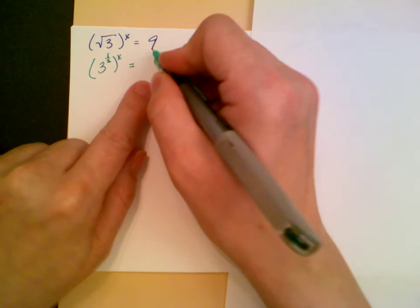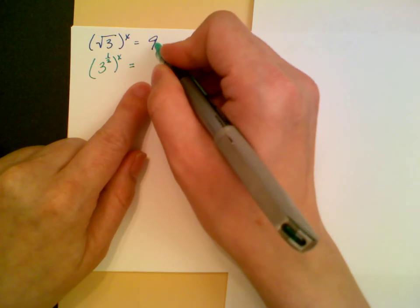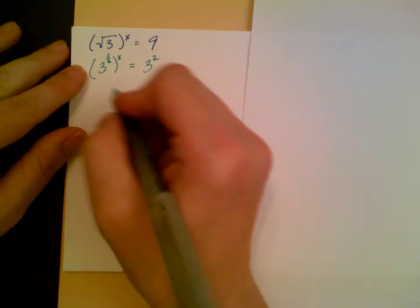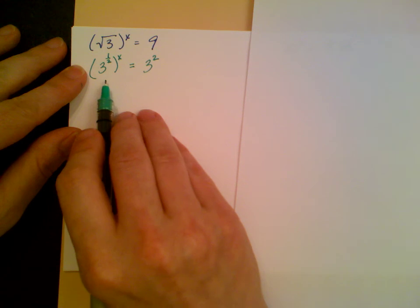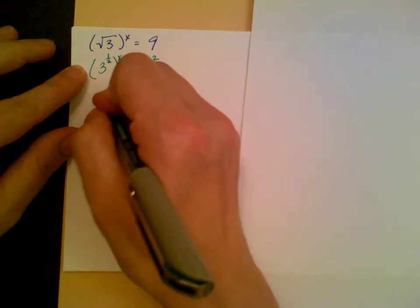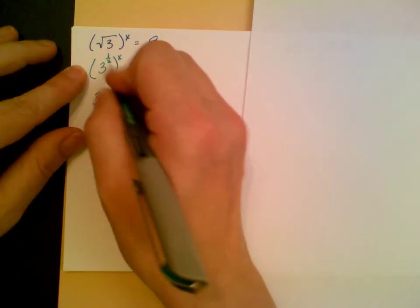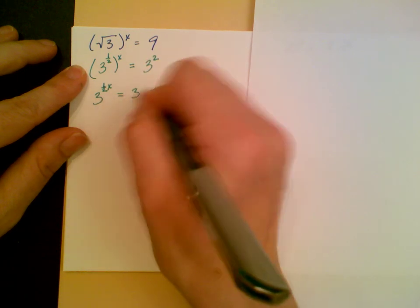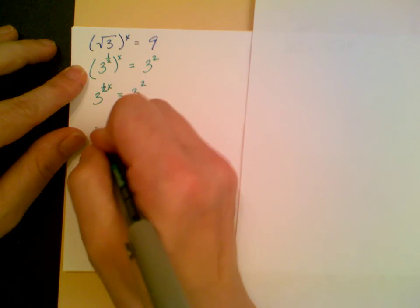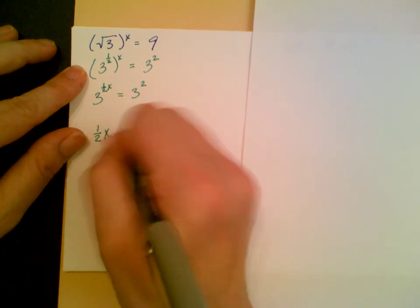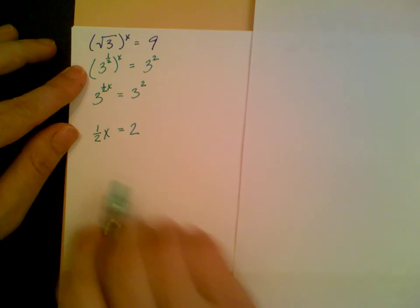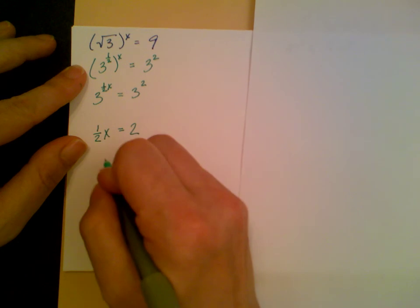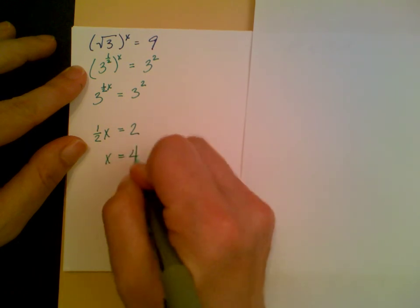Over here, of course, we know that 9 is equal to 3 squared. Actually that's one more step. I really should write this as 3 to the one-half x equals 3 squared. So one-half x equals 2. I can multiply both sides by 2 to get rid of this one-half, and I end up with x equals 4.